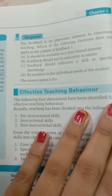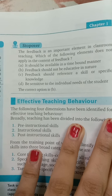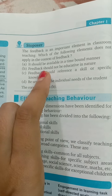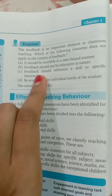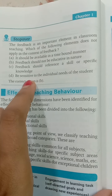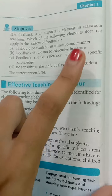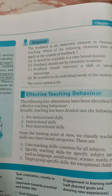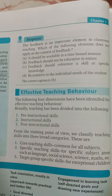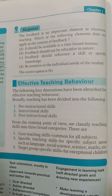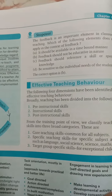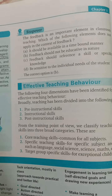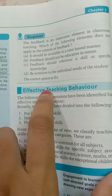There is a stop-over question on feedback. Feedback is an important element in classroom teaching. Which of the following does NOT apply in the context of feedback? Options: (A) It should be available in a time-bound manner; (B) Feedback should not be educative in nature; (C) Feedback should reference specific skill or knowledge; (D) Be sensitive to individual needs of the student. Feedback must be time-bound and educative in nature — it happens after teaching, students give it and teachers receive it. So 'feedback should not be educative in nature' is incorrect — the correct answer is B.